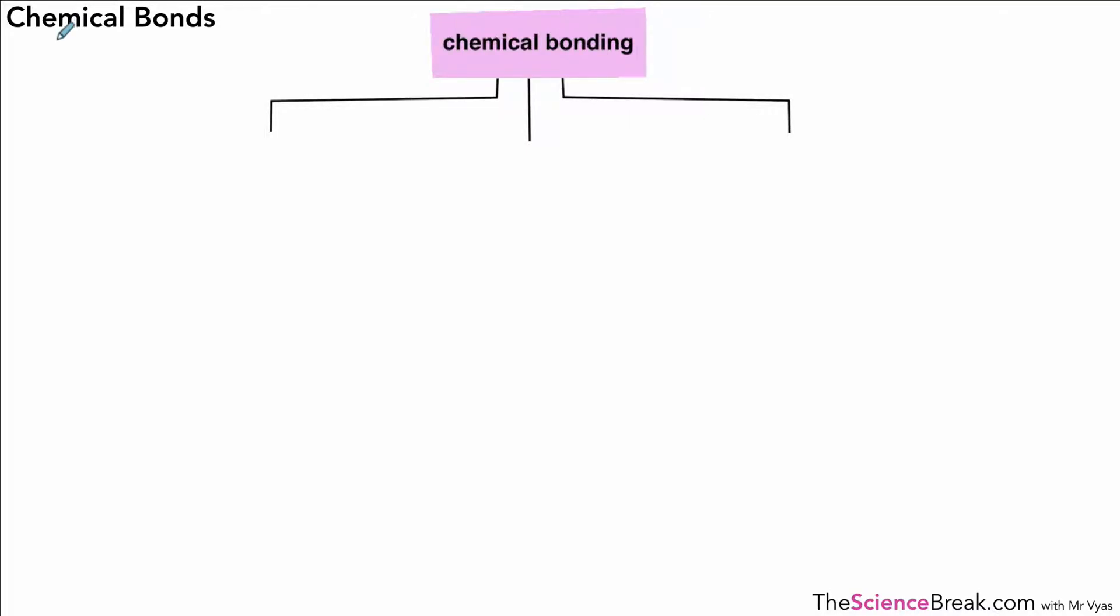Hello and welcome. Today we're going to look at chemical bonds, specifically three types of chemical bonds, all described as strong.